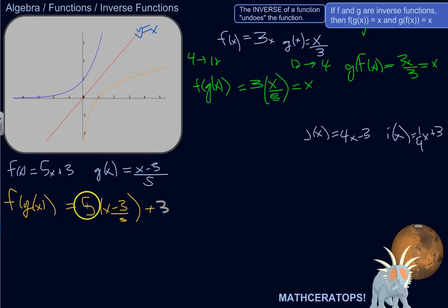Well, 5 times x minus 3 divided by 5 is just x minus 3. And then I'll add 3. So minus 3 plus 3 is 0. So this just equals x.